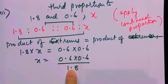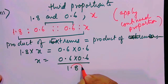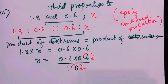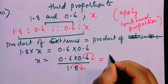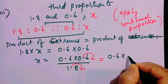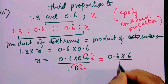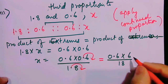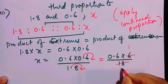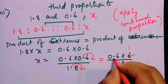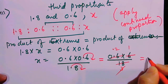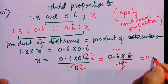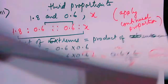Let me cancel it. The decimal is in the denominator, so I will remove it one place towards the right, and here also I remove one place towards the right. This gives 6 into 6 by 18. Now it is very clear: 6 one time, 6 three times, and 3 two times — so the answer is 0.2.